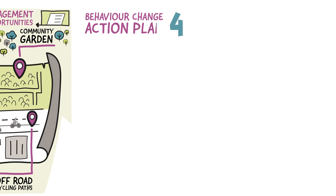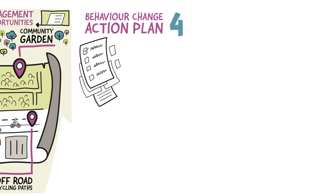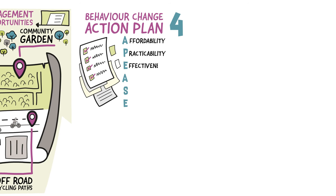4. Behaviour Change Action Plan. This should include a list of actions and solutions based on priority and their impact on behaviour. You could use the APPEASE criteria. This stands for affordability, practicability, effectiveness and cost effectiveness, adaptability, safety and equity.